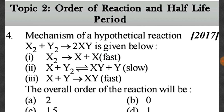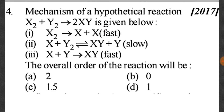Question 14: The mechanism of a hypothetical reaction X₂ + Y₂ → XY is given. Step 1: X₂ → X + X. Step 2: X + Y₂ → XY + Y (slow). Step 3: X + Y → XY (fast). What will be the overall order of the reaction?